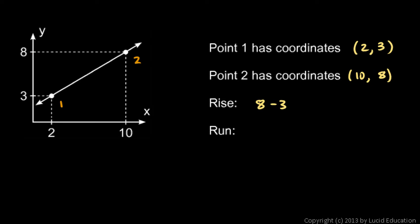And the run, you can see, if we go from point 1 to point 2, the horizontal change is given by that interval on the x-axis. From 2 to 10, the run is obviously 8, but let's think of it as 10 minus 2. Regardless of where those points are, we would take one number and subtract the other to find the change horizontally as we move from point 1 to point 2.